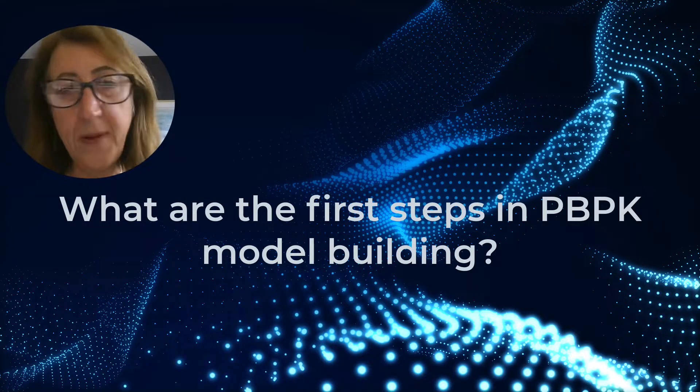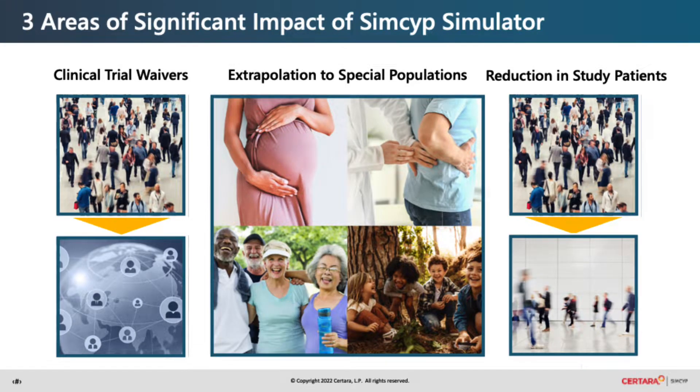When building a PBPK model, the first step is to think about the purpose of your model, because that influences what kind of data you need to collect and put into your model. For instance, if you're developing a drug that will be given alongside other drugs, you're looking to predict DDI liability — what will be the effects when you co-administer that compound with other drugs that might pose a DDI risk. We call this fit-for-purpose. Once the model is developed, it can be expanded to answer many other what-if questions, which is one of the beauties of PBPK modeling.